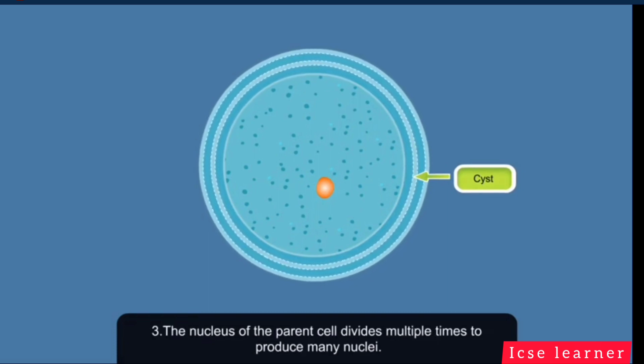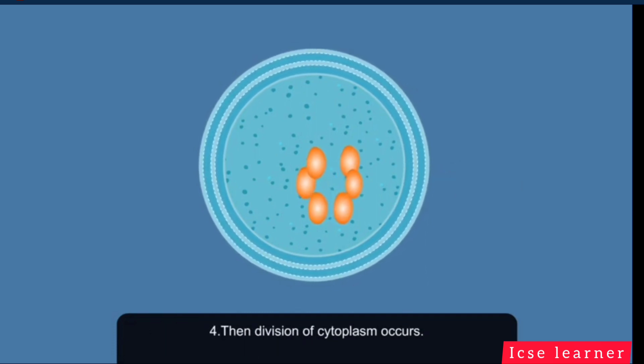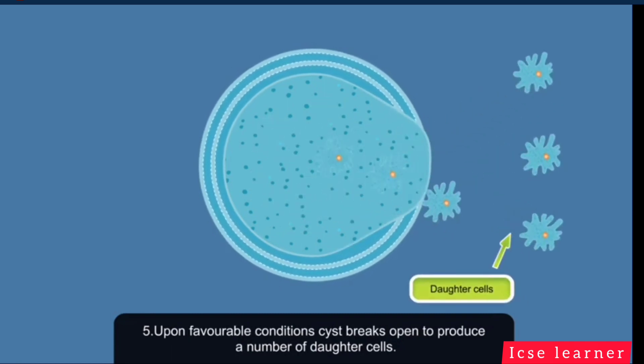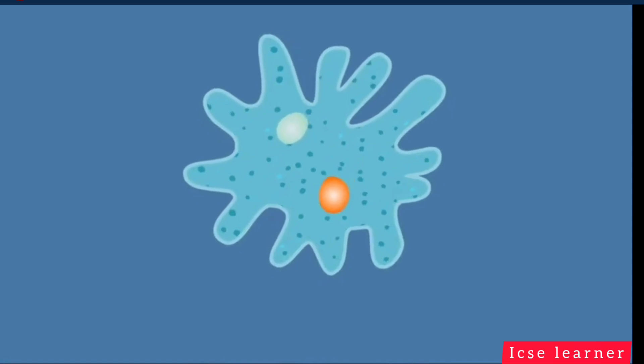Within the cyst, the nucleus of the parent cell divides multiple times to produce many nuclei. This is followed by division of cytoplasm. When favorable conditions return, the cyst breaks open to produce a large number of daughter cells. That was all about an amoeba.